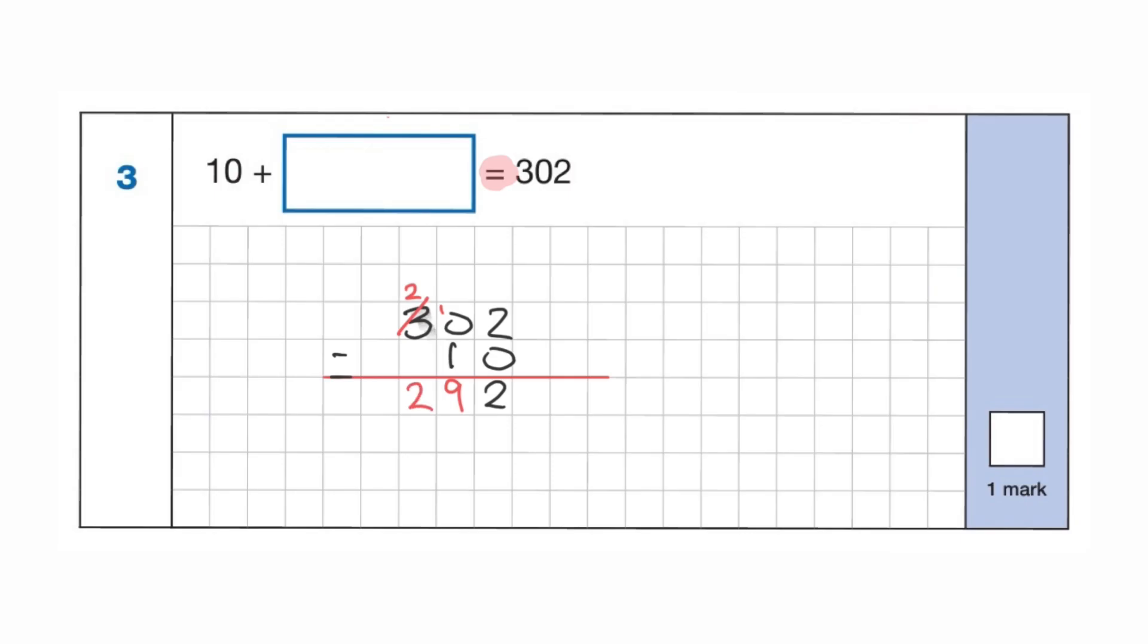So the answer is 292, which must be written in here. So 10 add 292 is 302. So it's really important to spot the fact that we already have the sum. The sum is already here, so we need to find a smaller number, so we're going to subtract this number, this addend, from the sum.